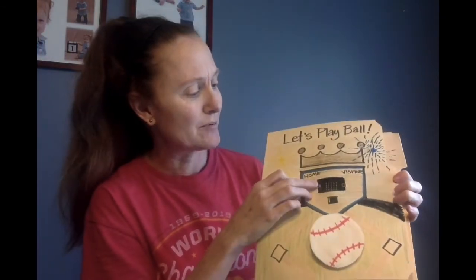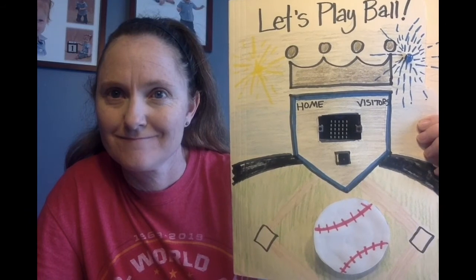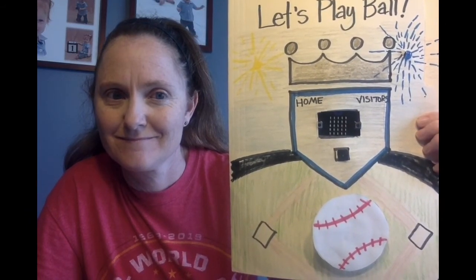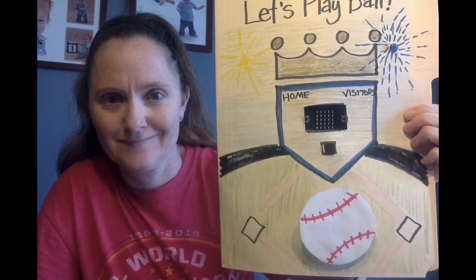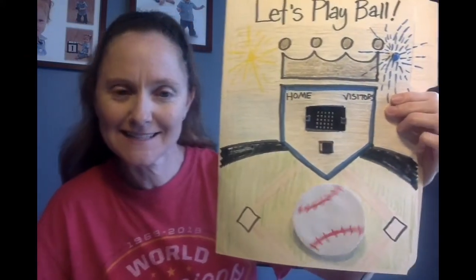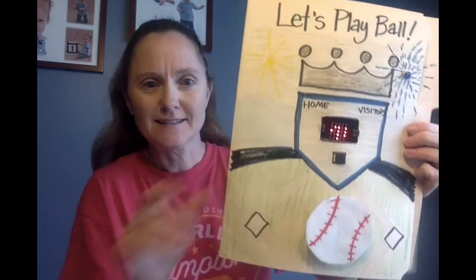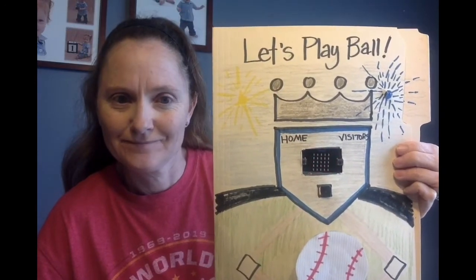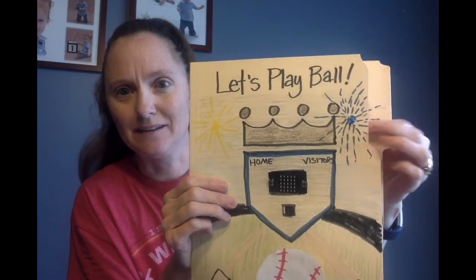On button A pressed, it plays Take Me Out to the Ballpark. On button B pressed, my baseball spins for three seconds. And on tilt left — like if you're opening the card — it says 'Home Run' and then my light flashes inside my fireworks.